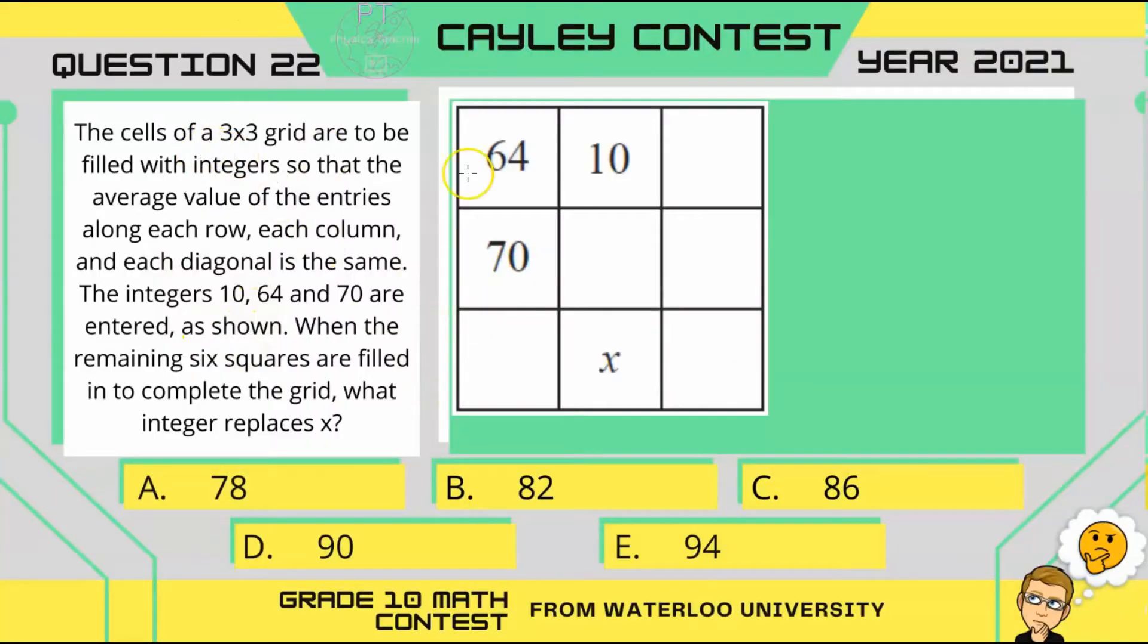In this question, we have a 3x3 grid, and it says that if you were to find the average for any row or any column or diagonal, they will all be the same.